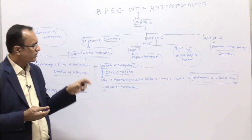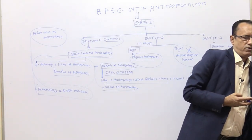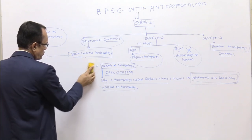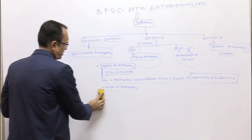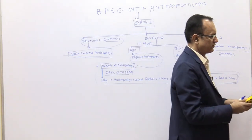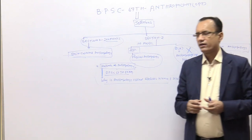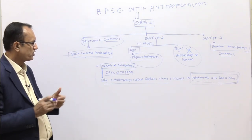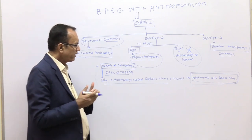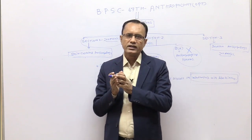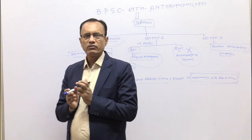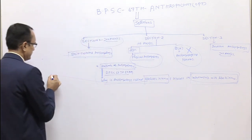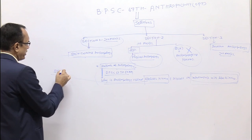Today I am going to talk about the basics of Anthropology, specifically the question asked by BPSC in the 66th exam: 'Why is Anthropology called a Holistic Science, and discuss its relationship with Life Science?' That is a very basic question. But many students learn that Anthropology is a holistic science without knowing how to write a proper answer on it. We have to write approximately 250 words on holistic science and 250 words on the relationship.